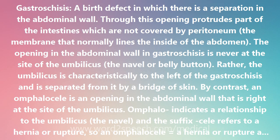Much of the midgut is temporarily herniated — protruded outside the abdomen — at the umbilicus. The midgut later re-enters the abdomen and the opening in the abdominal wall closes. The error responsible for an omphalocele is a failure for the midgut to return and re-enter the abdomen. The opening cannot close because to do so would pinch off part of the intestines.